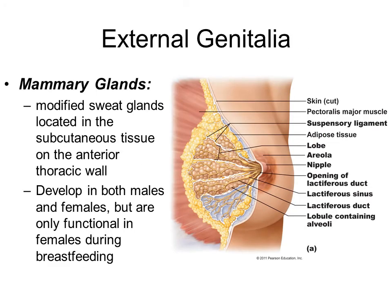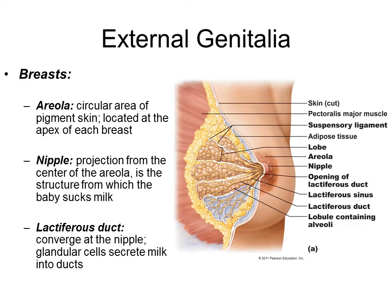Mammary glands are modified sweat glands. They develop in both males and females, but are only functional in females when a female is breastfeeding. On the breast, the circle of pigmented skin around the nipple is the areola. The nipple is in the center of the areola, where the baby suckles to obtain milk. The breast contains several ducts called lactiferous ducts, which are glands that secrete milk into the ducts, all converging at the nipple.